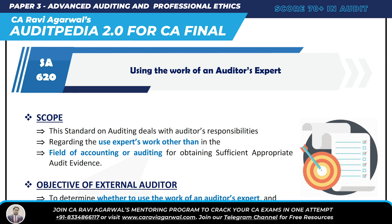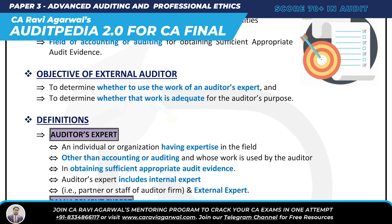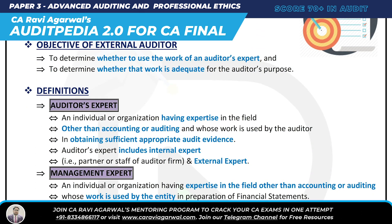The objective of ISA 620 is to determine whether the auditor can use the work of an auditor's expert and to check whether that work is adequate for audit purposes.